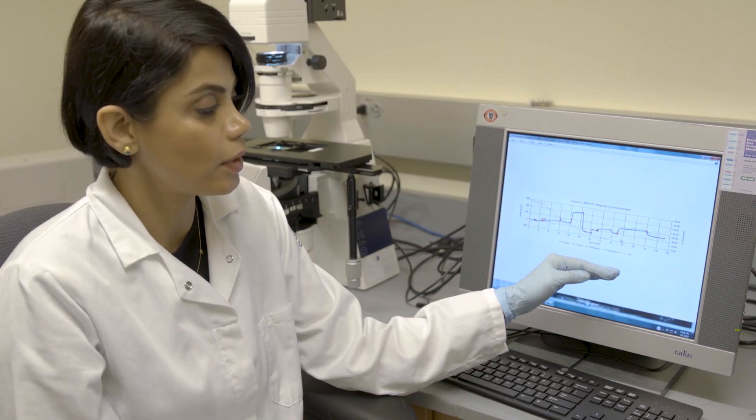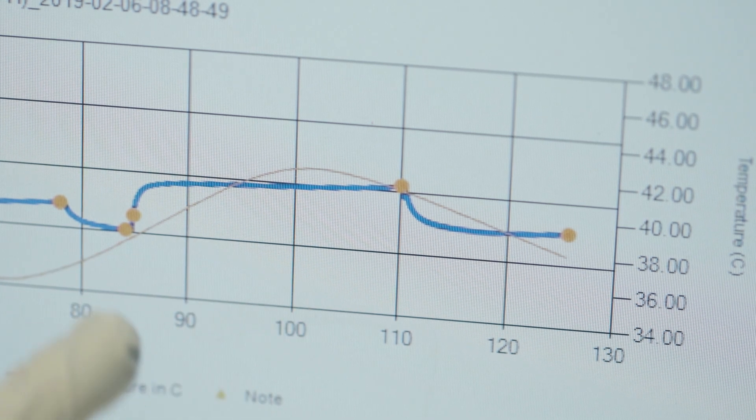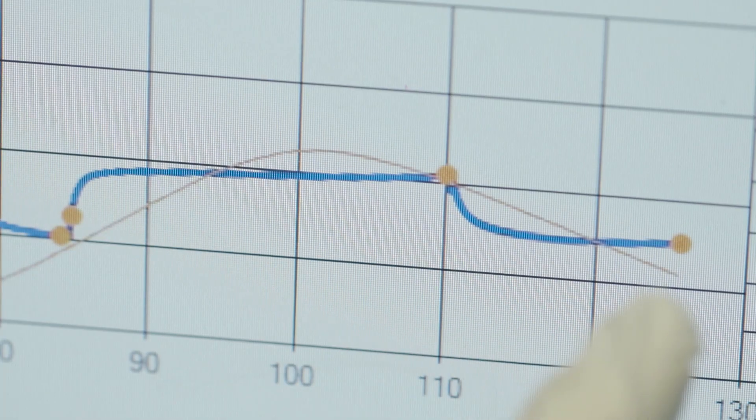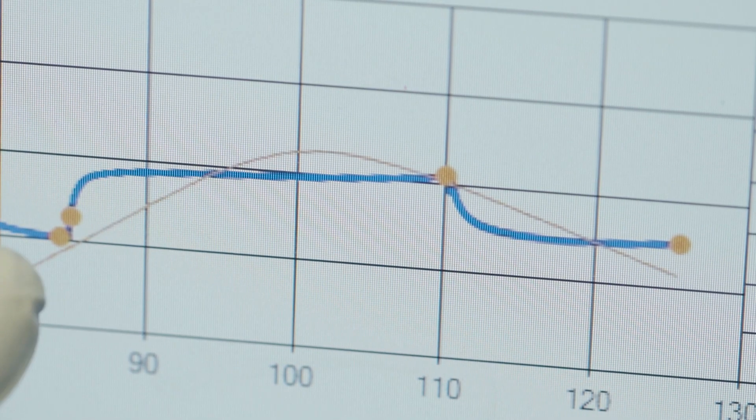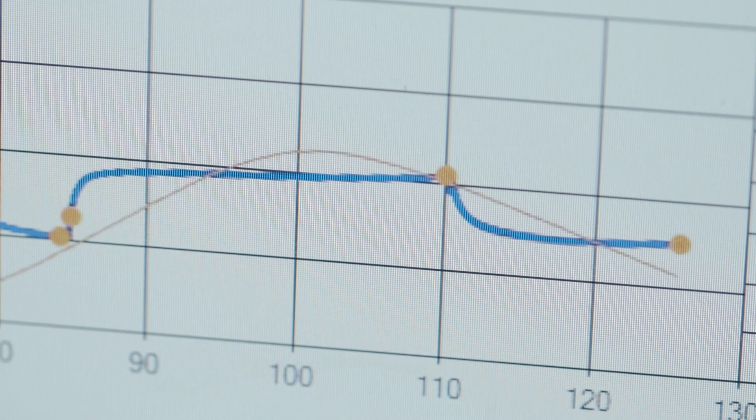This shows you the response that we get from CRISPR chip. Here, you're looking at when we actually introduce our DNA sample and remove it from the sensor. This endpoint, if it doesn't match this initial point, that means that our CRISPR chip was able to detect the gene that we programmed it to detect.